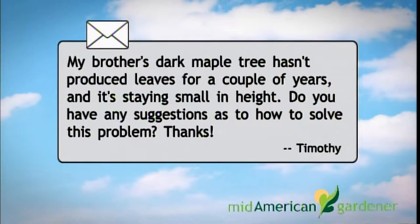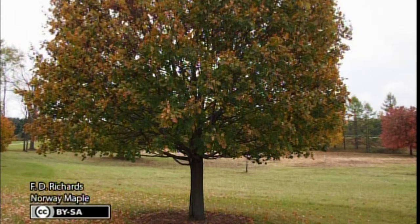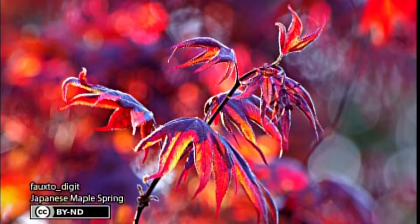This is from Timothy Smith. He says his brother has a dark maple tree that hasn't produced leaves for several years and is staying at a small height, and he wanted to know if we had any solutions. Well, first of all, if your maple hasn't leafed out for several years the odds are it's dead, so you need to start over and take it out and replant. I'm suspecting that since you said it was a dark maple, you got a Crimson King Norway maple, which has dark purple leaves. Norway maples are shallow-rooted and they do not tolerate being planted even a few inches too deep, and that may have been why it died.